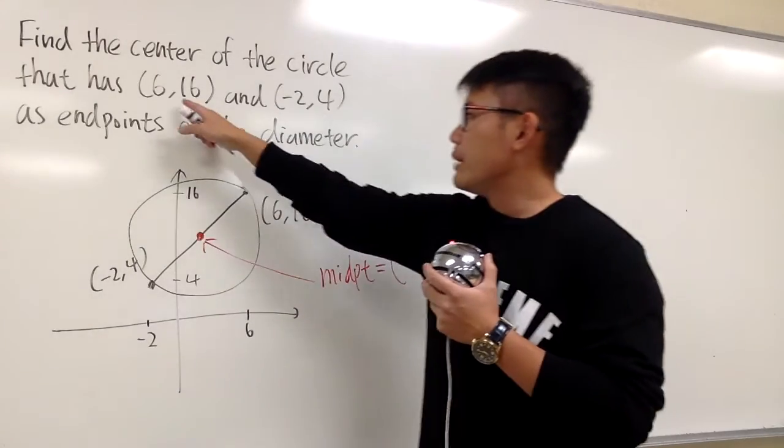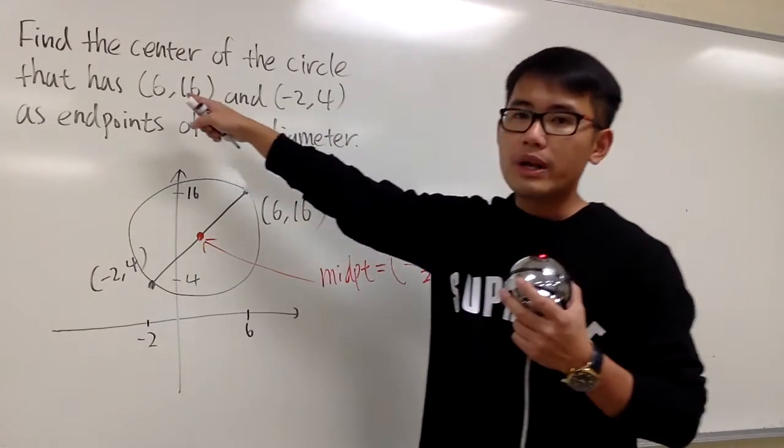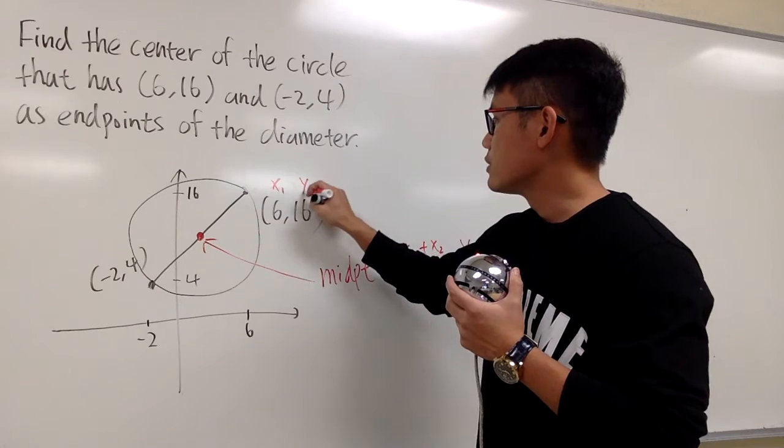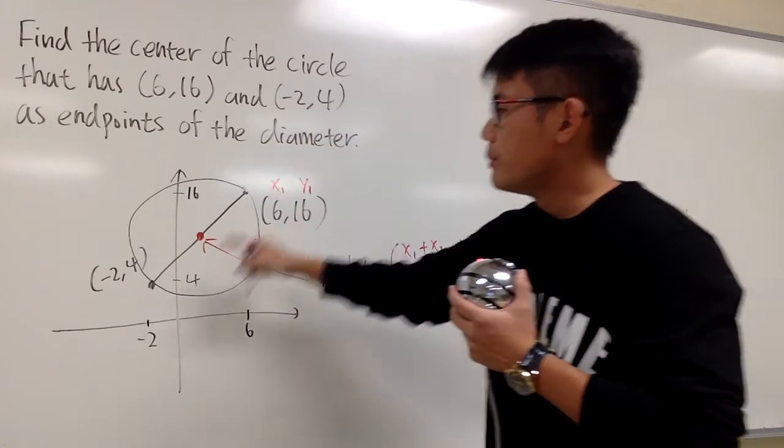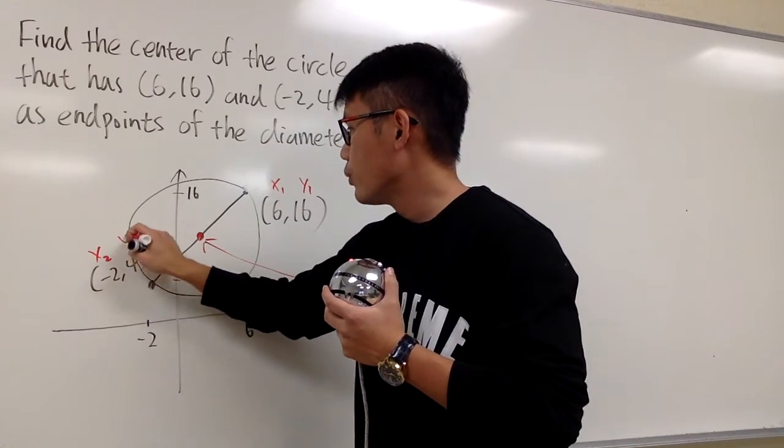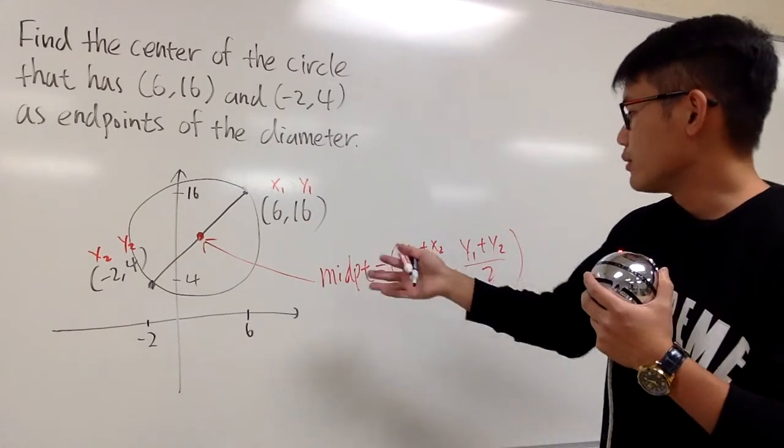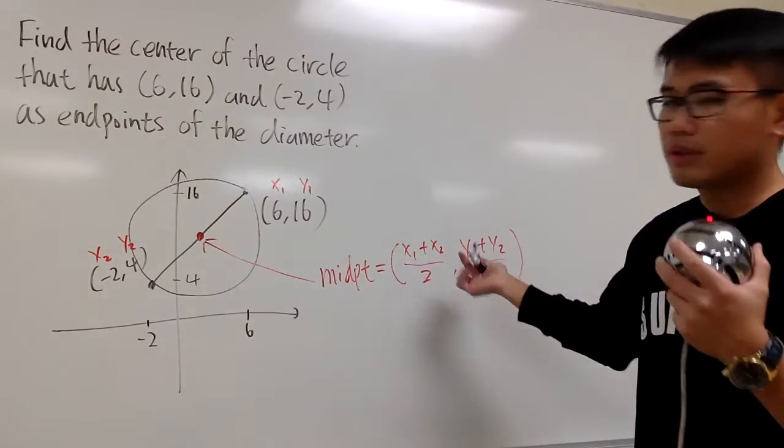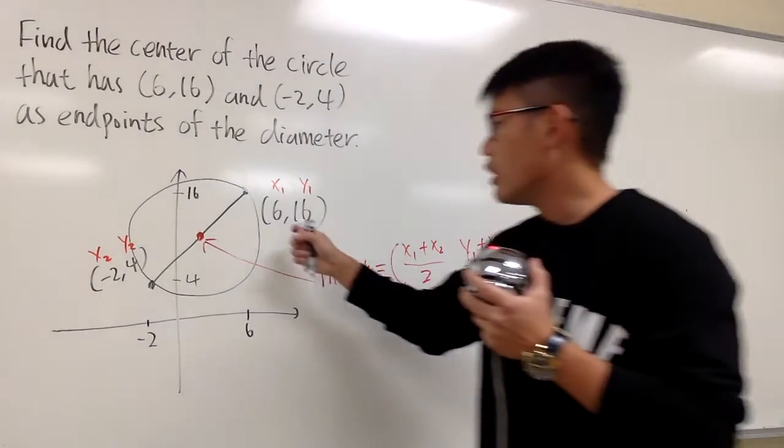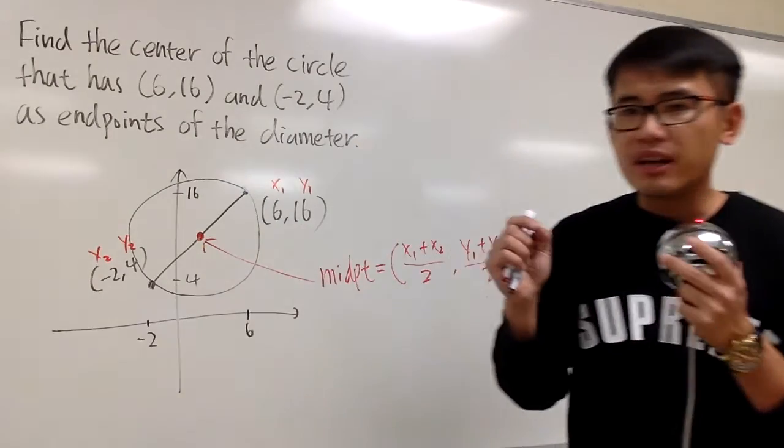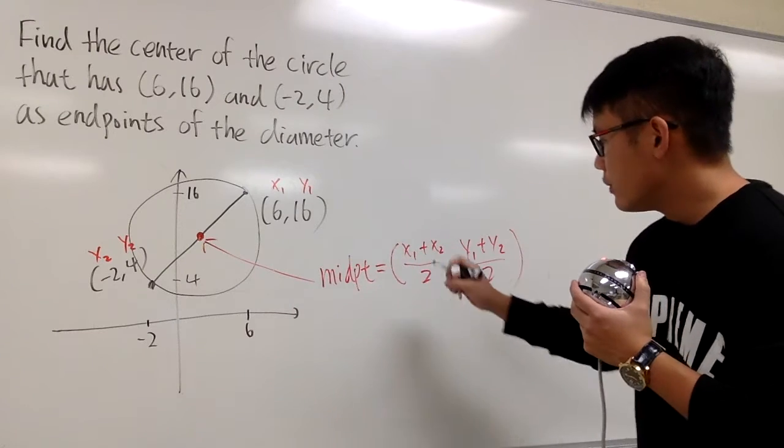And I'm just going to label this as the first point, because that's why it says right here first. This is x1, this is y1, and let me label this as x2, y2. It doesn't matter how you label it, as long as you are adding them and divide them by 2, that's all. Remember, you are trying to find the average of the x values. So, you add them together and divide it by 2.